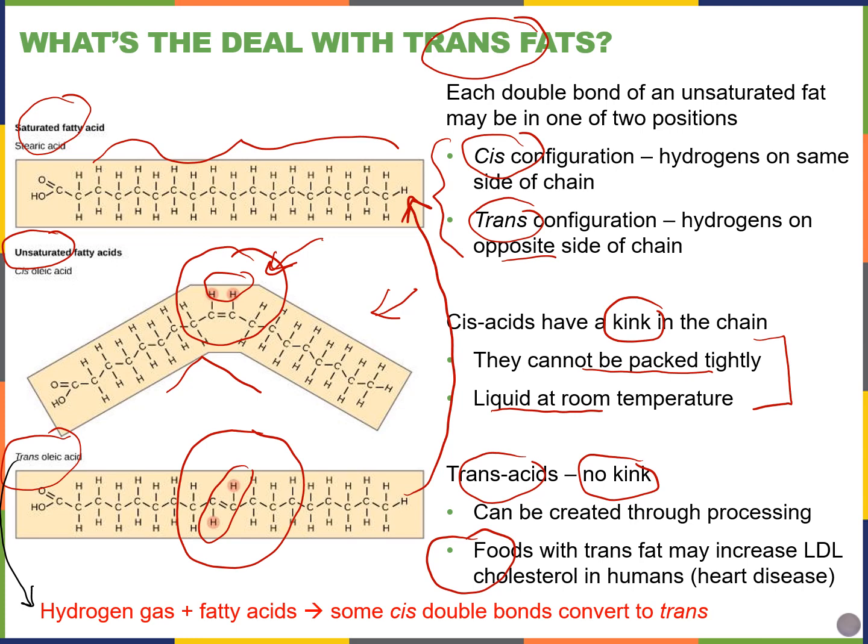Hydrogenation forces the addition of more hydrogens and eliminates double bonds to make oils more solid at room temperature instead of liquid. This reminds me of M&Ms — if you don't want your chocolate candy to be liquid in your hand, you can make it more solid by forcing the formation of trans fats.